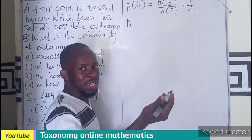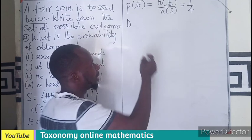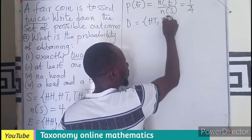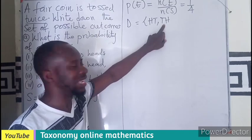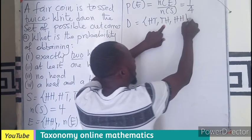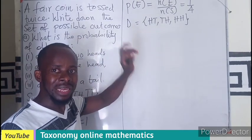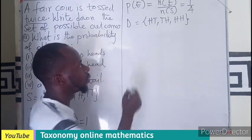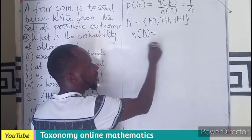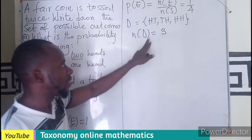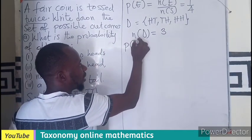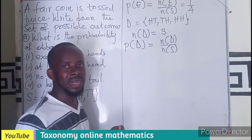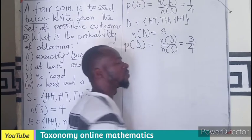We let D equal the event of obtaining at least one head. That set includes: head and tail, tail and head, and head and head — since each of these contains at least one head. So the number of elements in D is 3. The probability of D equals 3 over 4, which is three quarters.